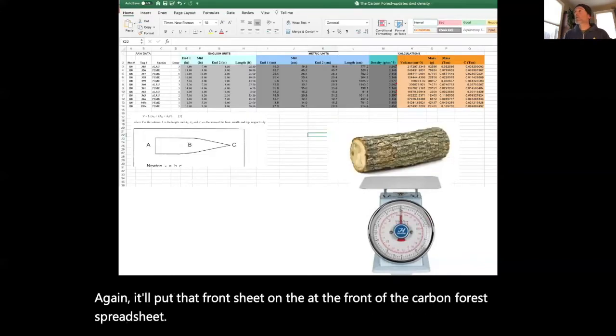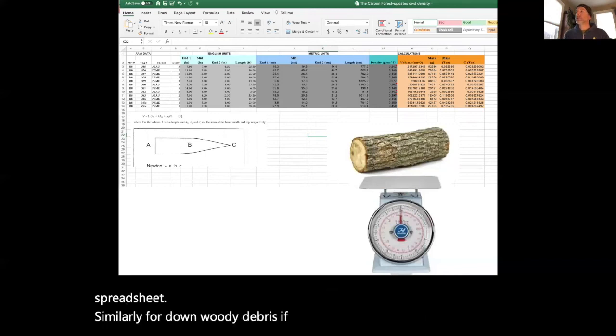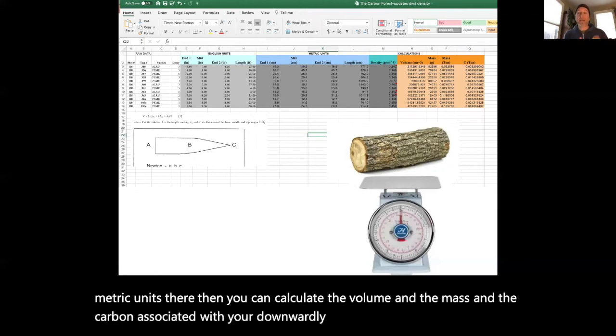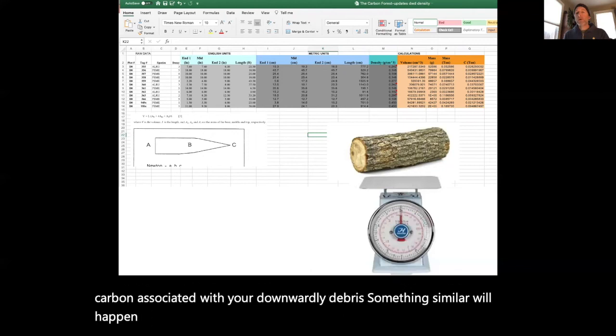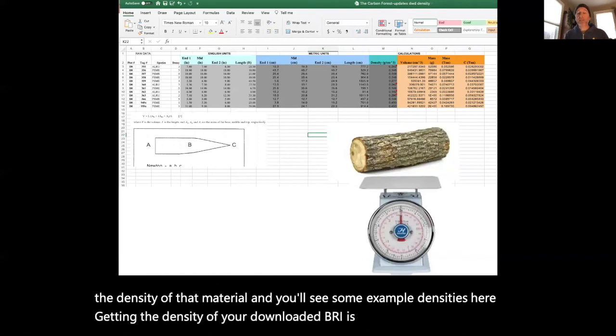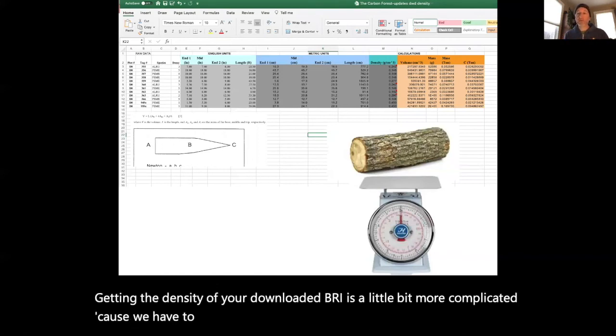Similarly, for down woody debris, if you enter your dimensions especially in metric units there, then you can calculate the volume and the mass and the carbon associated with your down woody debris. Something similar will happen for snags. One note, though, you'll note that it asks in teal here for the density of that material, and you'll see some example densities here. Getting the density of your down woody debris is a little bit more complicated because we have to use some lookup tables.